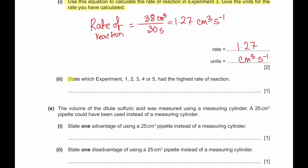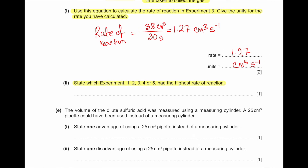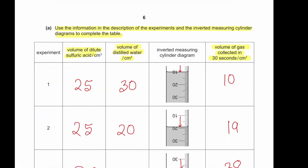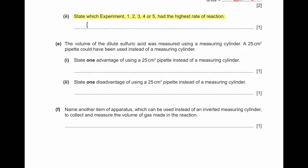State which experiment had the highest rate of reaction. In experiment 5, the highest amount of gas is produced in the shortest time, so experiment 5 has the highest rate of reaction.